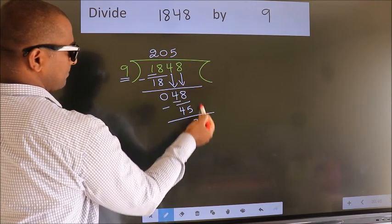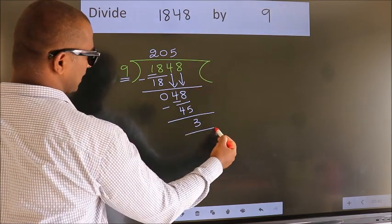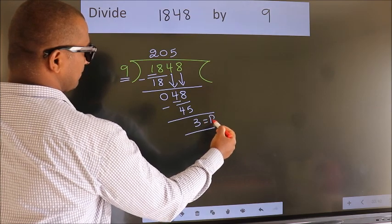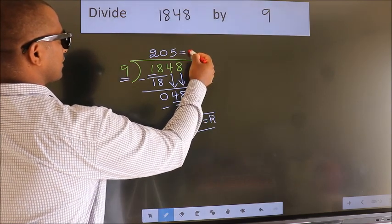No more numbers to bring down, so we stop here. This is our remainder. This is our quotient.